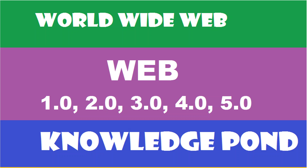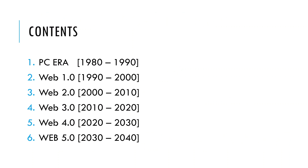Welcome to the Knowledge Point YouTube channel. In this video I would like to share the different stages of the web: Web 1.0, 2.0, and current 3.0, and future versions 4.0 and 5.0. The PC era starts from 1980 to 1990, then Web 1.0 is 1990 to 2000, Web 2.0 is 2000 to 2010, and Web 3.0 is 2010 to 2020.